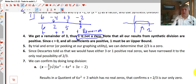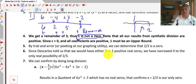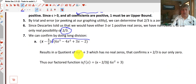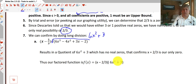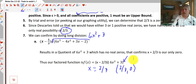By trial and error or using a graphing utility, you can see that two-thirds is a zero. If you graph that function, you'd see that right around two-thirds we have a zero. Since Descartes told us we would have three or one positive real zeros, we've narrowed it to the only possibility of two-thirds. By doing long division, we get a quotient of 6x squared plus 3, which is not factorable. That confirms x equals two-thirds is our only zero. So our factored function is (x minus two-thirds)(6x squared plus 3), and our only real zero occurs at x equals two-thirds, or the ordered pair (2/3, 0). The remaining solutions are imaginary, and we'll work on those another time.